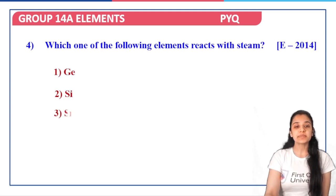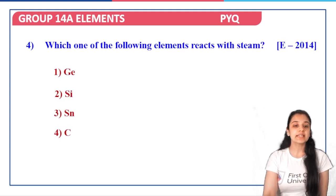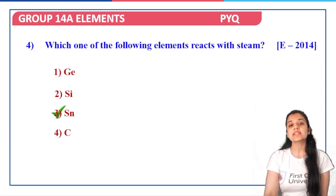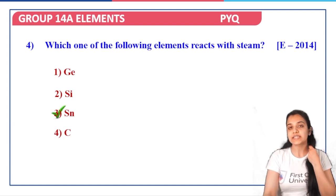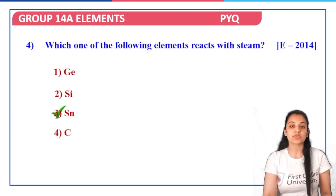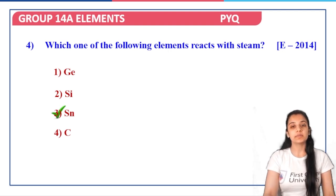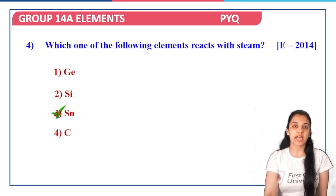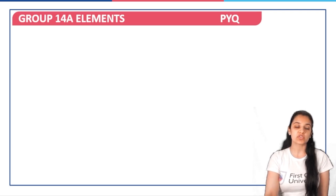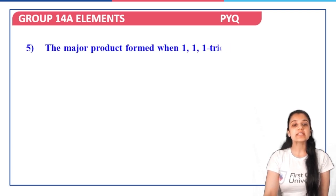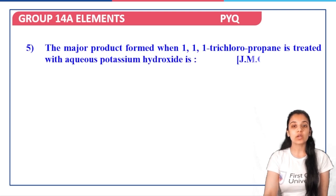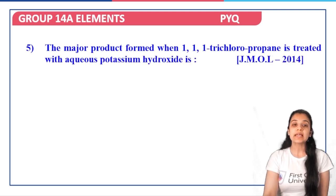Next question: which of the following elements reacts with steam — germanium, silicon, tin, or carbon? The answer is tin. We haven't extensively studied tin yet, but tin is the element that reacts with steam. That's another information-based question for you to note down.